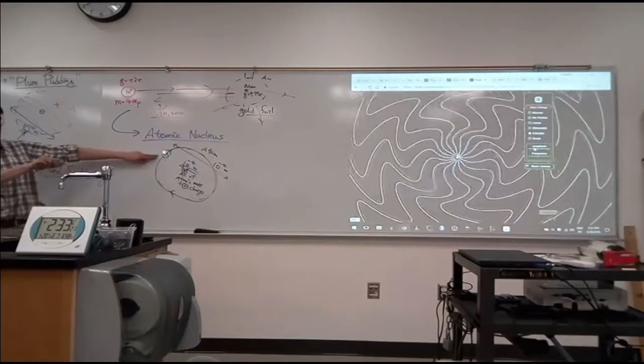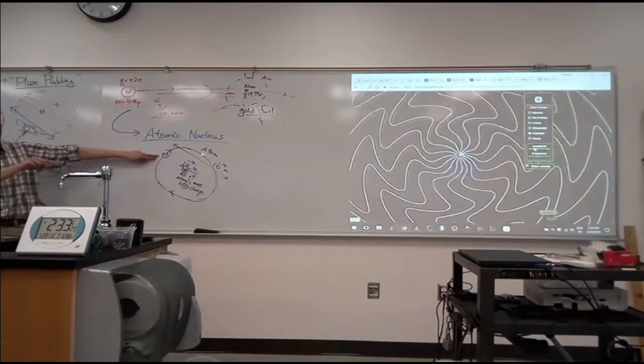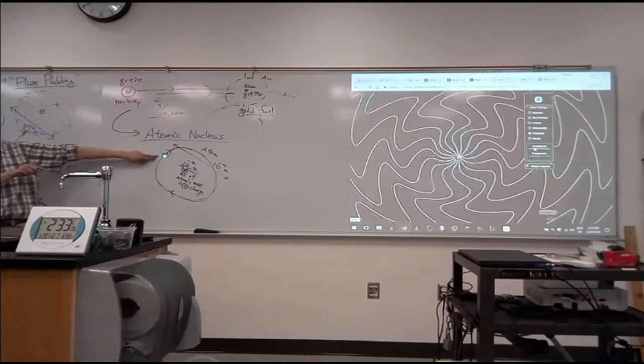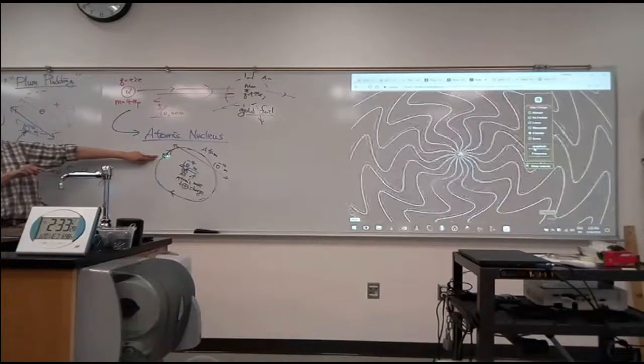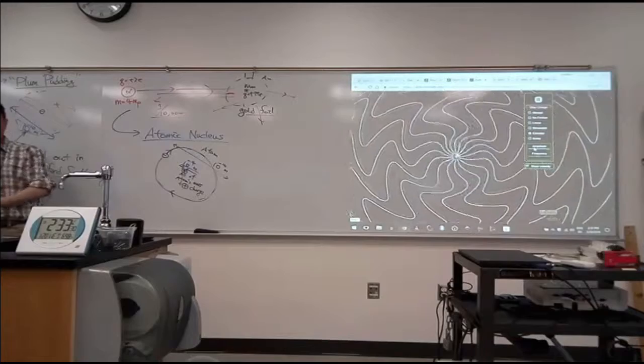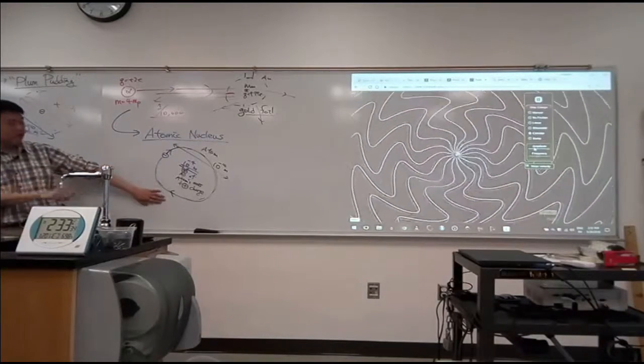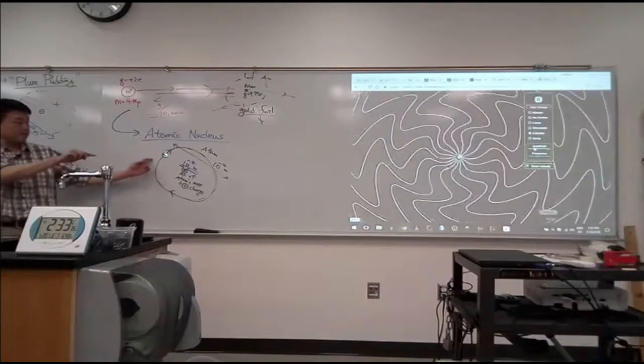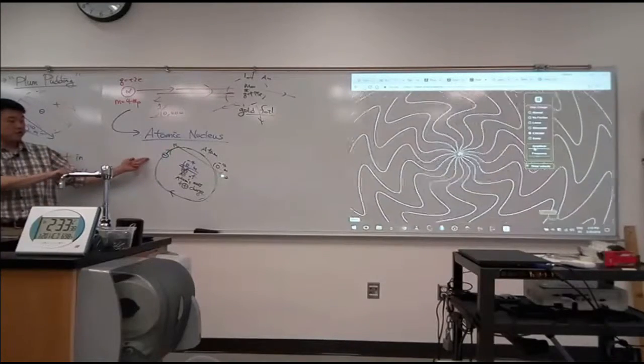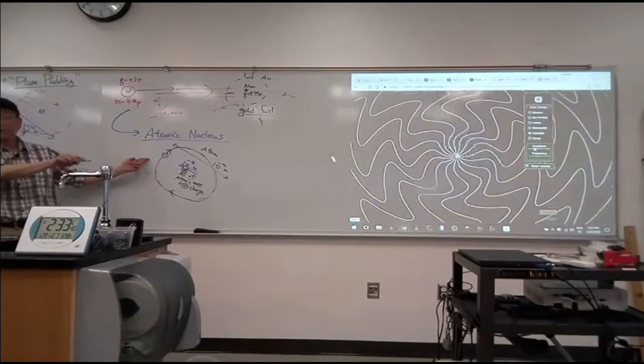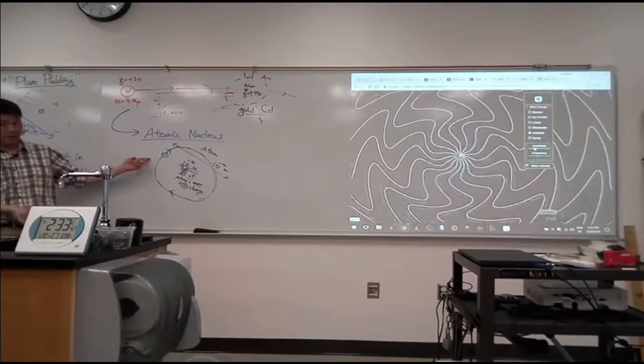This electron in orbit has some amount of total mechanical energy. That's how it stays in orbit. So from the laws of electricity, what you do not predict is that as this is going in circle, it should also be emitting electromagnetic wave, which will carry away energy.